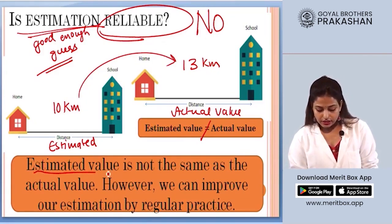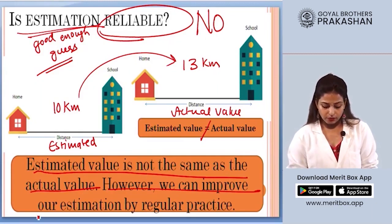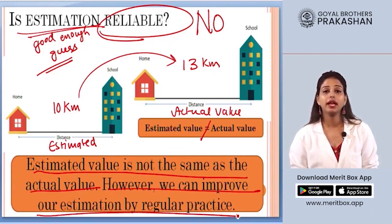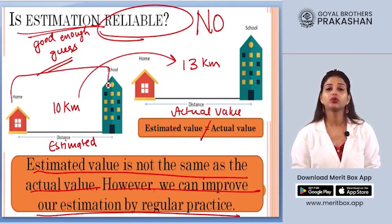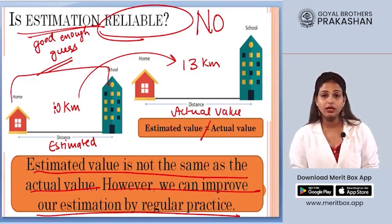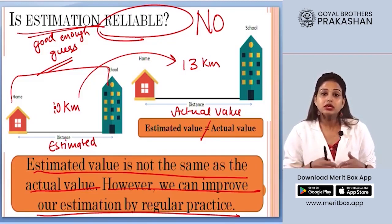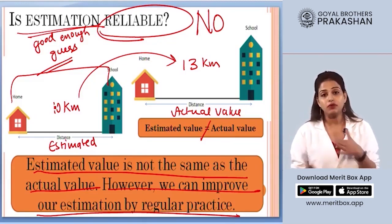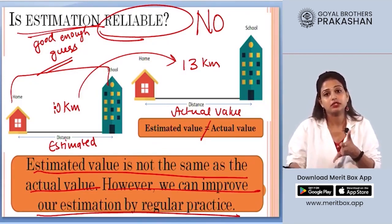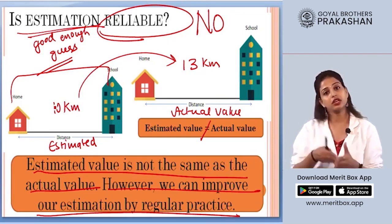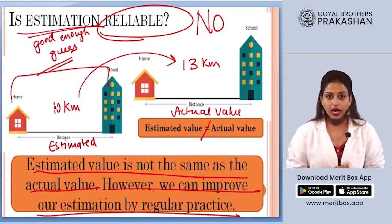Estimation is not reliable when you need an exact value, but it is a convenient method when you need a quick measurement or don't have a tool. The estimated value is not the same as the actual value; however, we can improve our estimation with regular practice. For example, knowing the distance between home and school was actually 13 km helps you better estimate similar distances in the future.